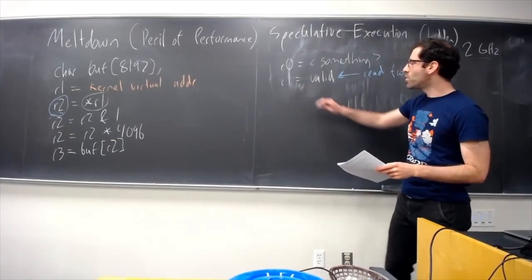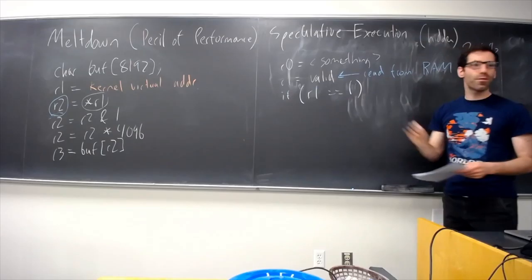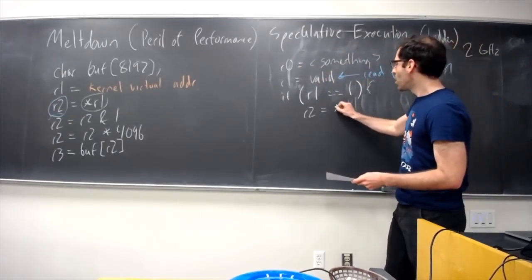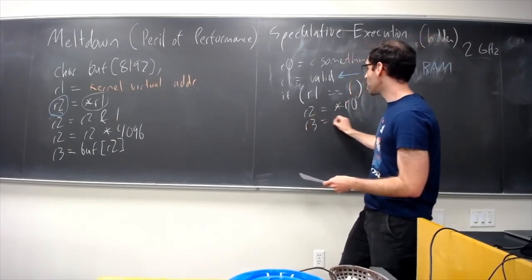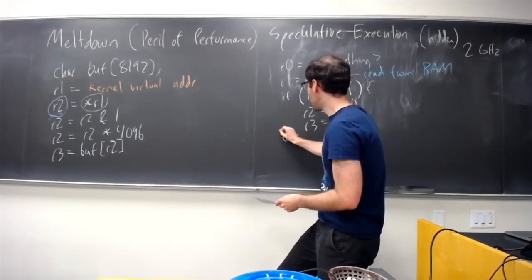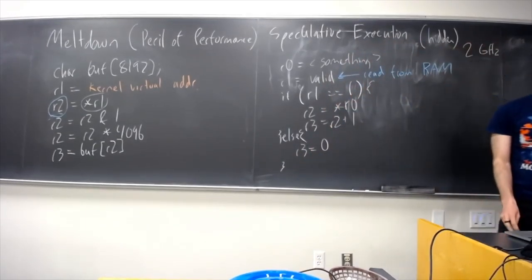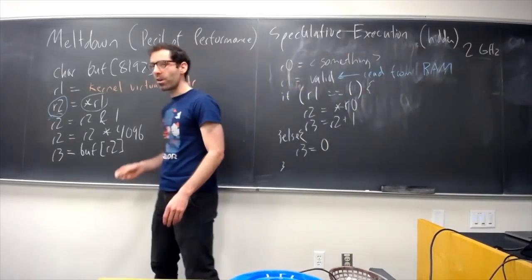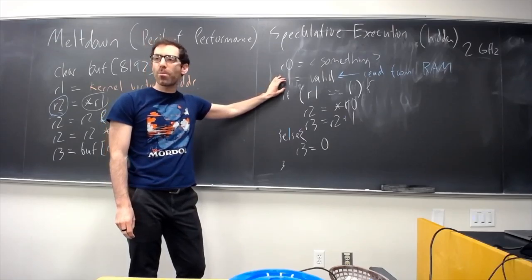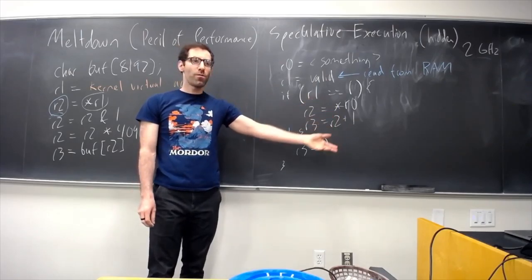So let's imagine that after what we're doing with this valid is, we're saying, if it is 1, then we're going to, so if R0 turned out to be a valid pointer, we'll read it, and then, you know, do something. Doesn't really matter what. With that data, maybe add one to it. And otherwise, we will set R3 to 0. And so what our CPU is going to do is say, alright, I'm waiting for this slow operation to come back. And instead of just sitting around and doing nothing, I'm going to speculatively execute instructions further down the line.